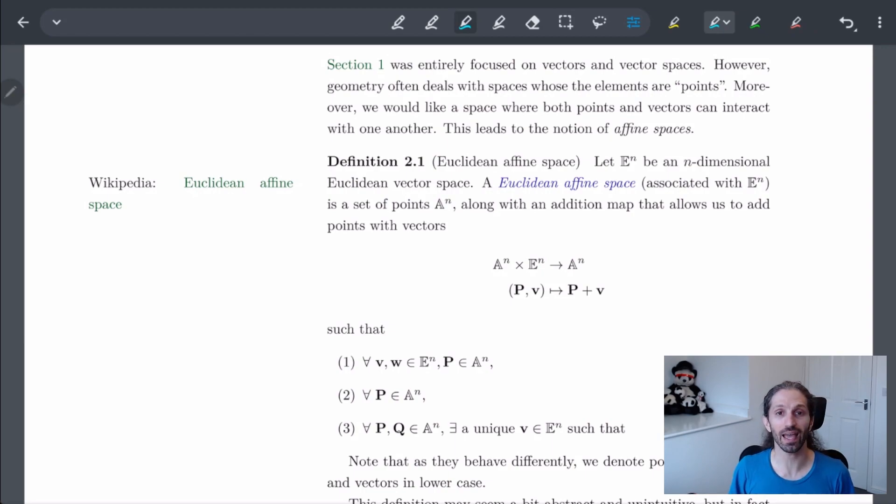Basically, we let E^n be an n-dimensional Euclidean vector space. So remember that this is somewhere where we have an orthonormal basis. We let the Euclidean affine space associated with E^n to be the set of points A^n along, so A^n is a set of points, along with an addition map that allows us to add points with vectors.